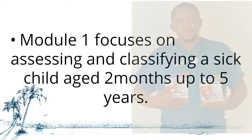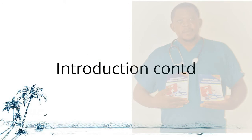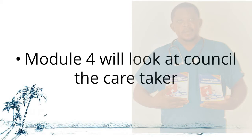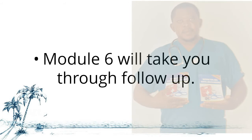Integrated Management of Childhood Illness has six modules. Module one focuses on assessing and classifying a sick child aged two months up to five years. Module two takes you through identifying the treatment. Module three covers treating the child. Module four looks at counselling the caretaker — the person looking after the child. Module five looks at management of the sick infant. Module six takes you through the follow-up visit.